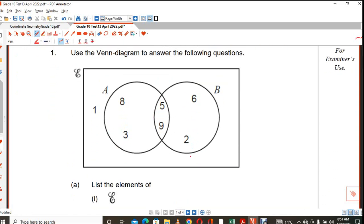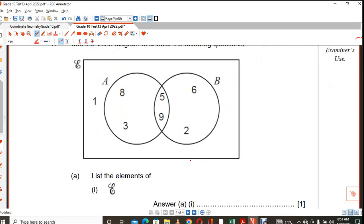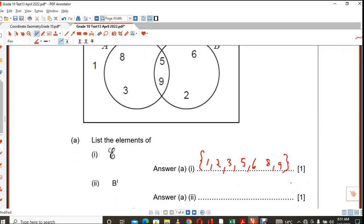So the first question says you must list all the elements of the universal set. That is everything that is there. And you should always try to list these things in order. So 1, 2, 3, 5, 6, what else is there? 8 and 9. And you should not forget to put them in curly brackets.